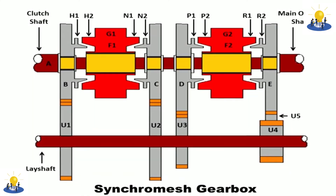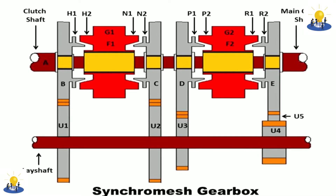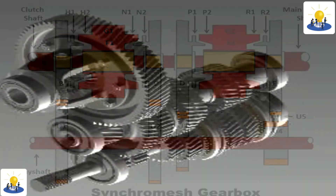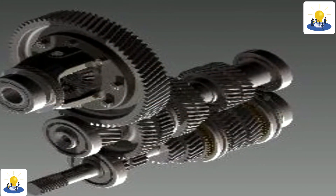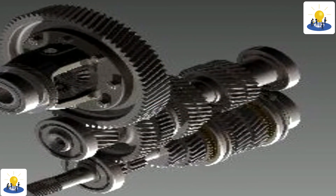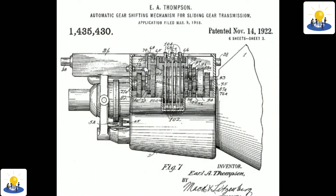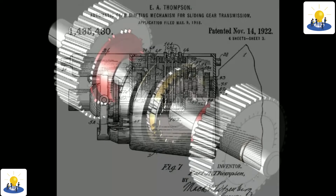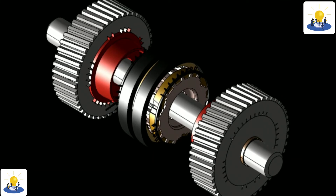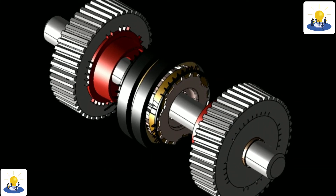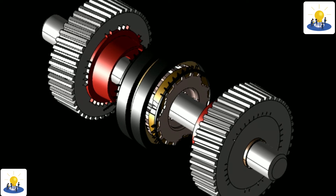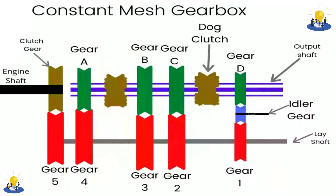In order to provide smooth gear shifts without requiring the driver to manually match the engine revs for each gear shift, most modern passenger car transmissions use synchromesh, also called synchronizer rings, on the forward gears. These devices automatically match the speed of the input shaft with that of the gear being selected, thus removing the need for the driver to use techniques such as double clutching. The synchromesh transmission was invented in 1919 by Earl Avery Thompson and first used on production cars by Cadillac in 1928.